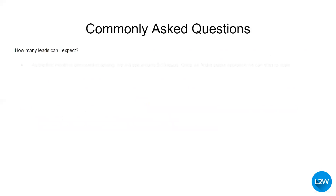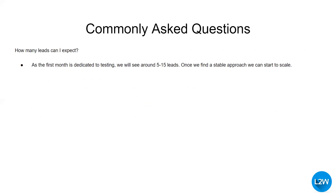Some commonly asked questions when working with us. How many leads can you expect? As month one is dedicated to testing, we don't want to commit to guaranteed results purely because we're in fact-finding mode. But typically we can see around five to fifteen leads in the first month. Once we find a stable approach, we can start to scale.